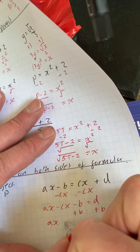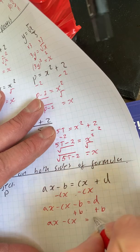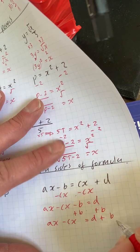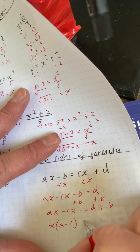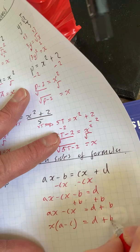So I've got ax minus cx is equal to d add b. Now we've got x's in both, so we can factorise. So I've got x times a minus c is equal to d add b.